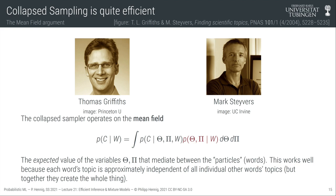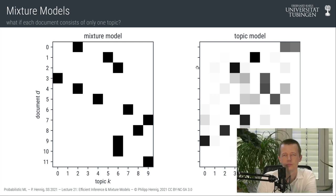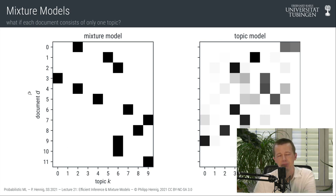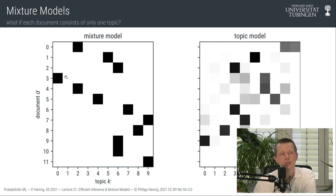We now take a detour to a different model class. When introducing topic models, I argued we want a model that assigns every document to not just one topic but to a probability distribution over topics. The simpler alternative would be a totally binary sparse assignment assuming every document belongs to one and only one topic. Such models are called mixture models, typically used not for document corpora — since documents cover multiple topics — but to separate mutually exclusive types of objects from each other.